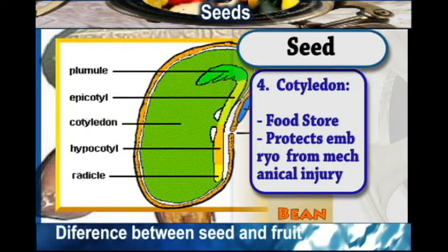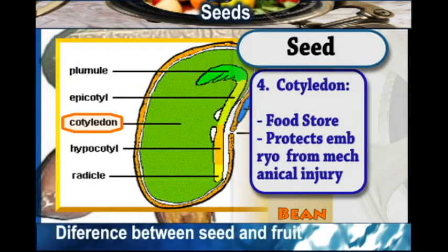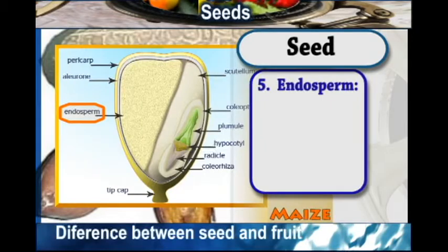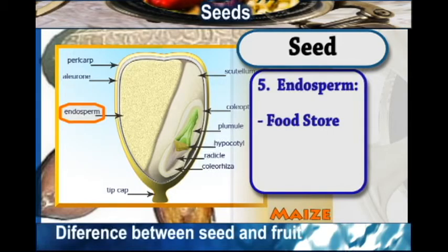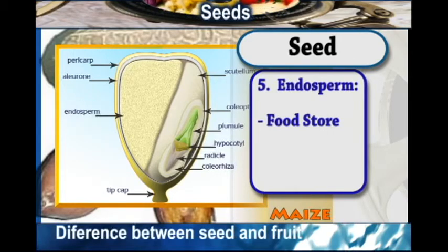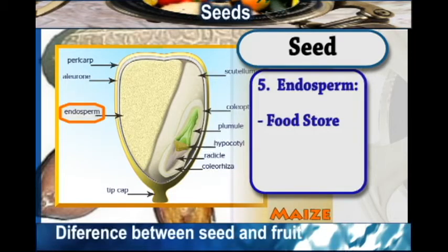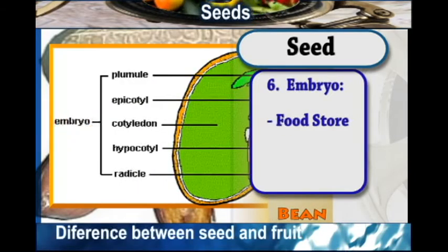Then we have the endosperm. The endosperm also acts as a food store and it is mainly found in seeds — it is a part of the seed.